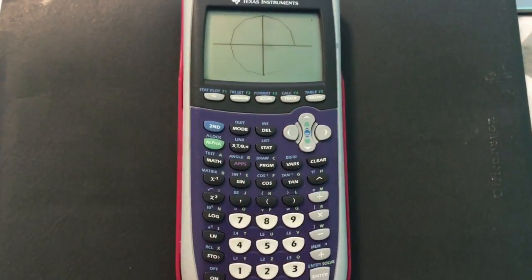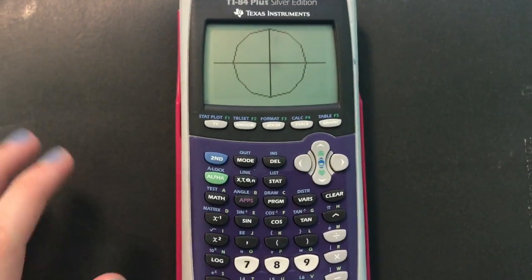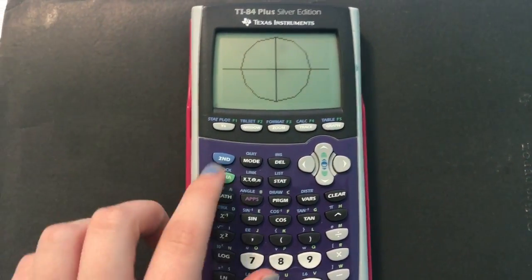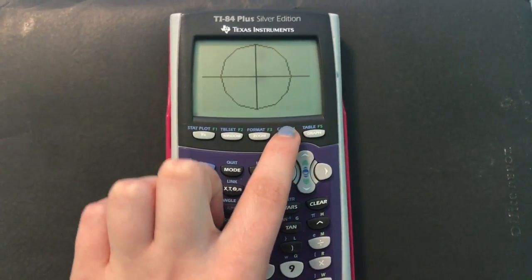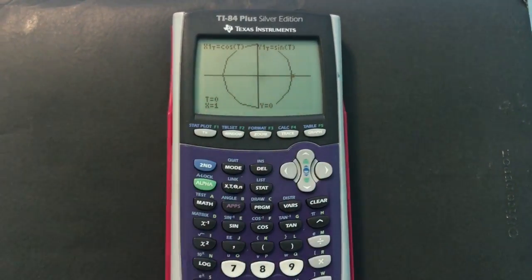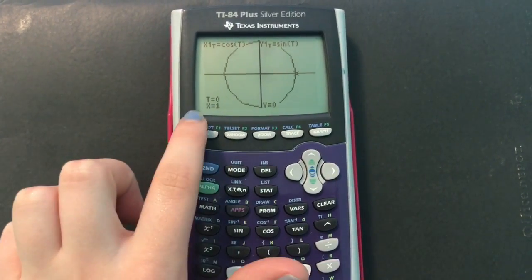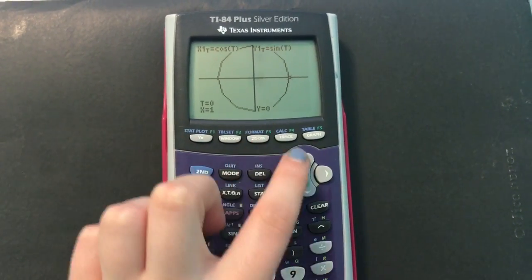And then you're going to go over to your graph, and you get this sort of nice circle. It's not great on the TI-84. And then you go to trace. And here we're at this point. This is where it starts. And it has x equals 1, y equals 0. So cosine is 1, sine is 0.